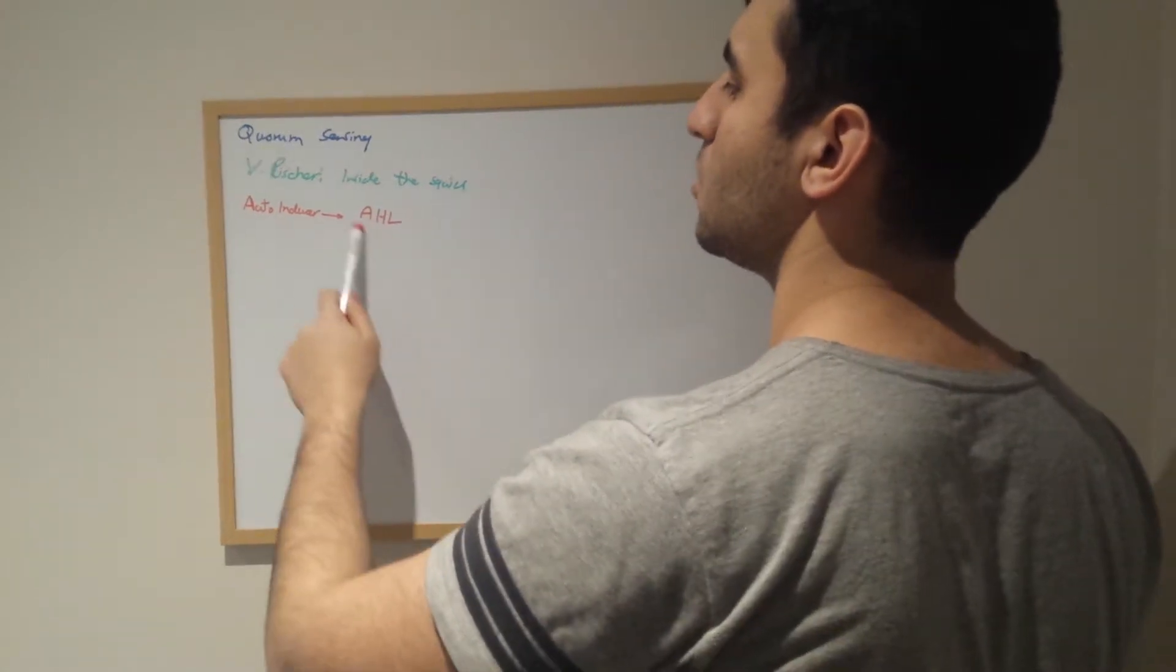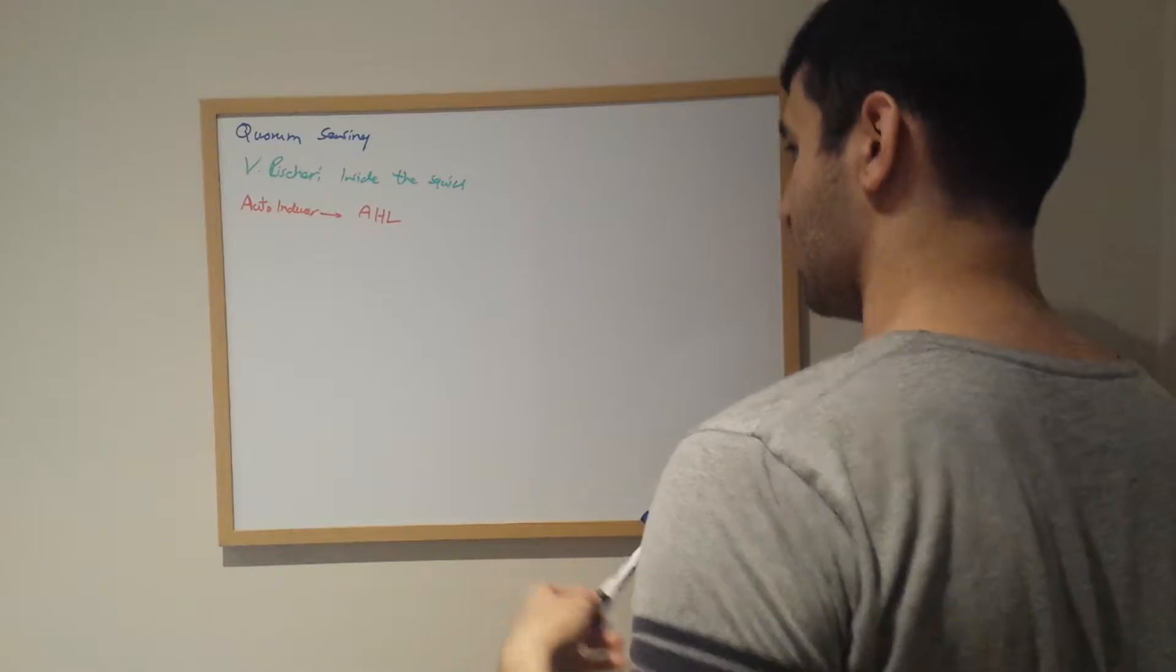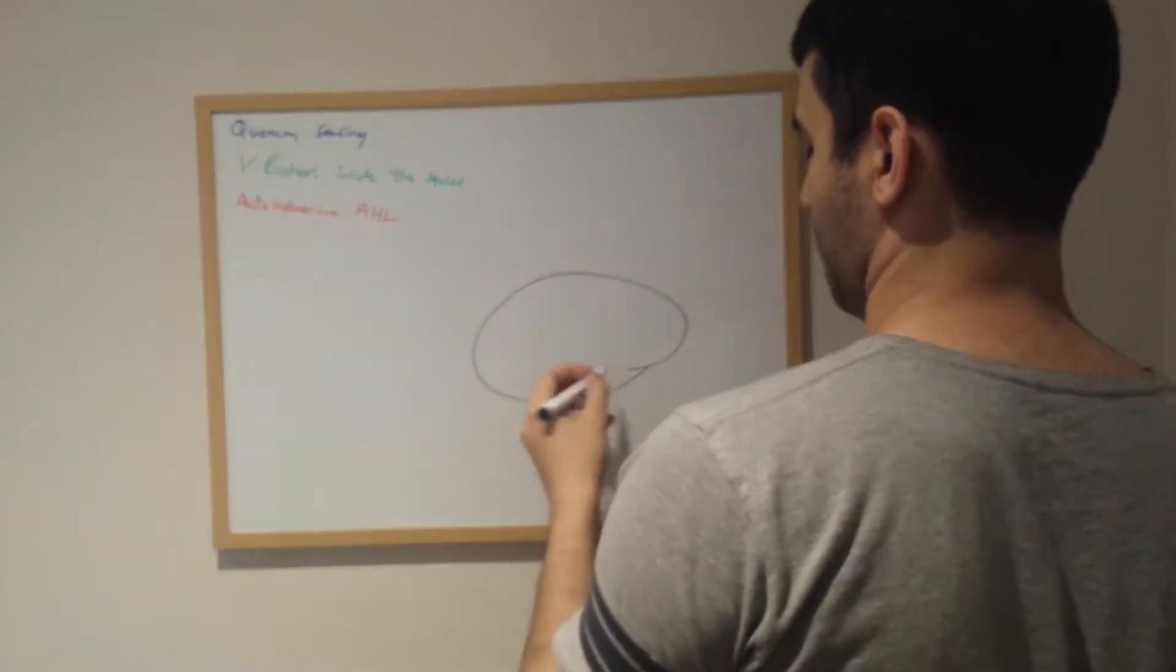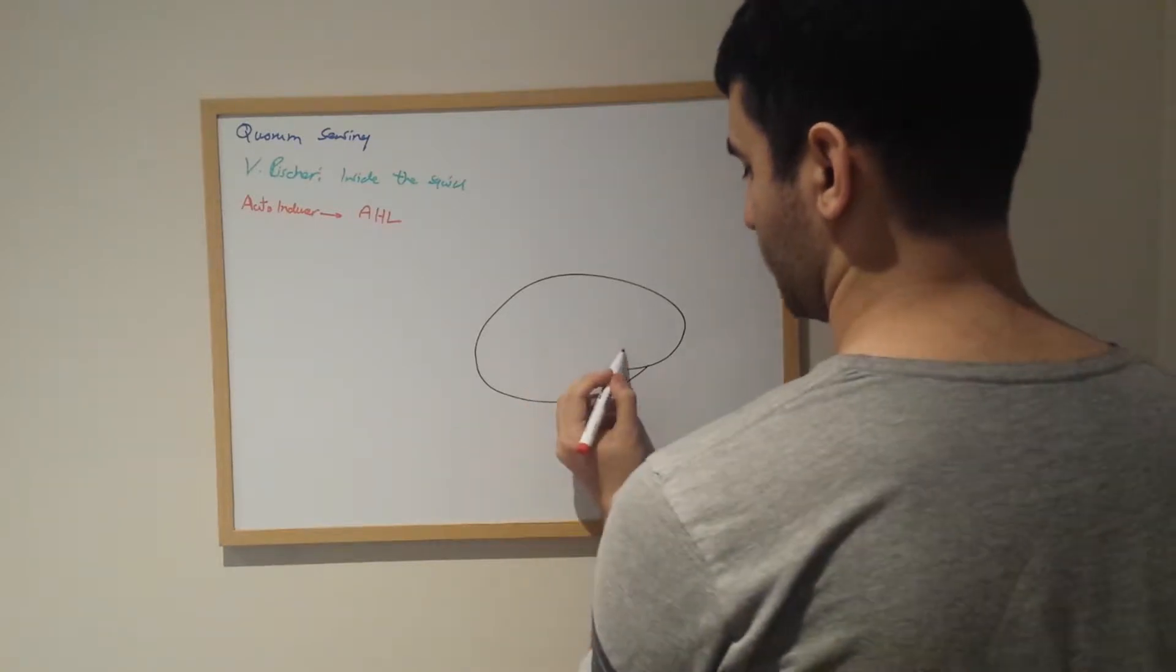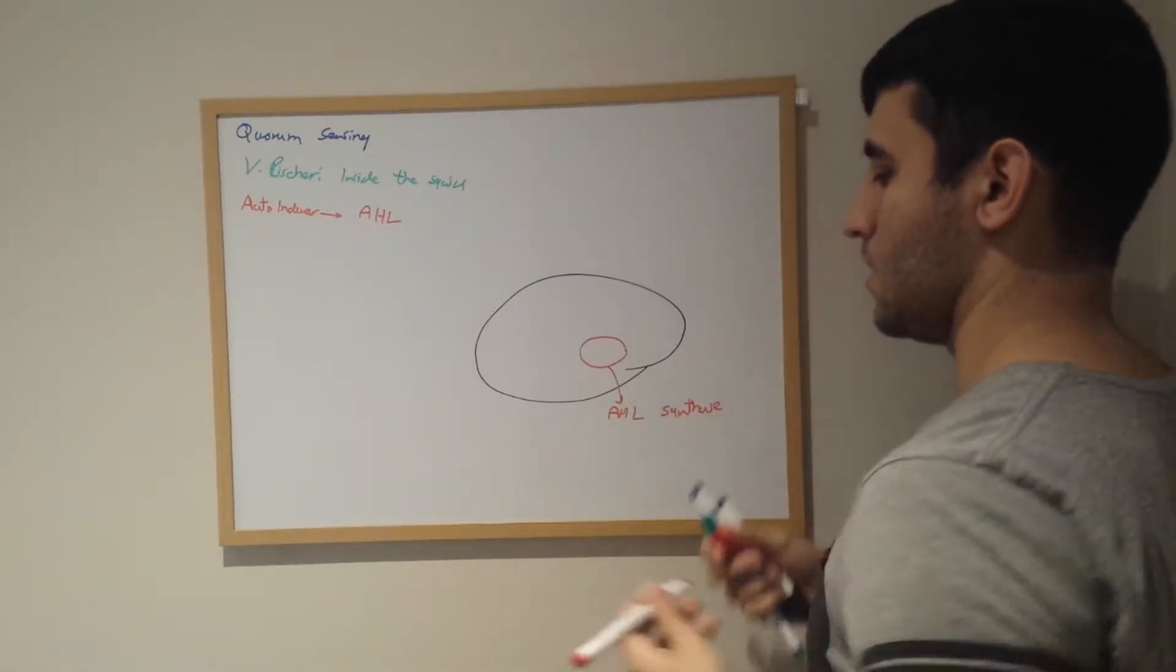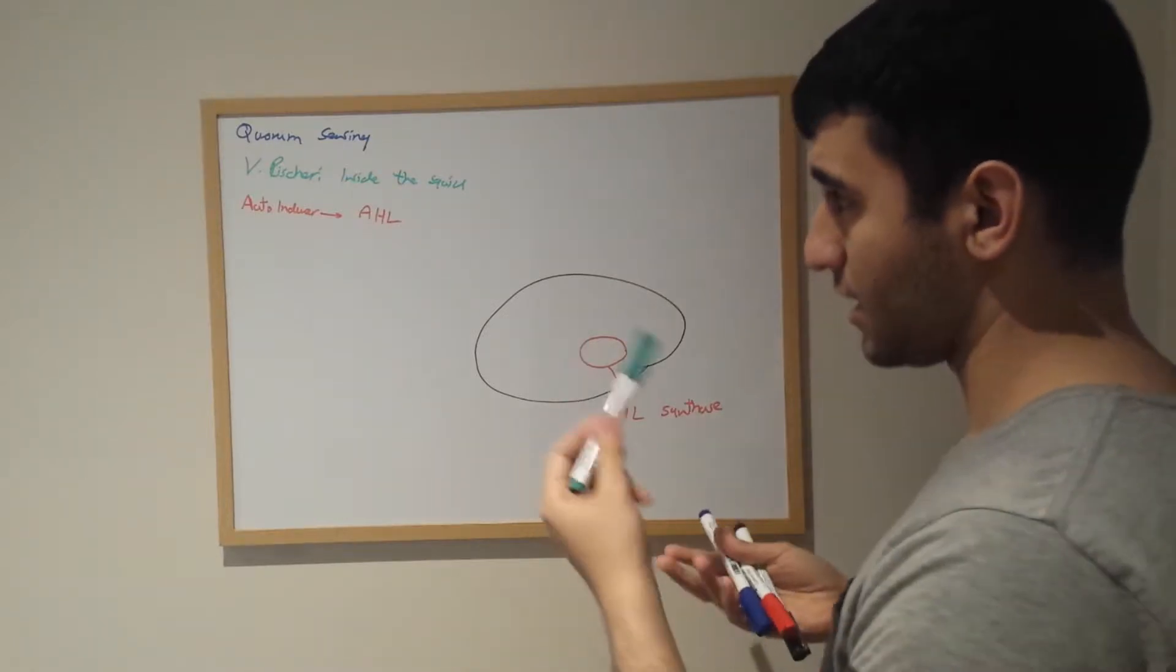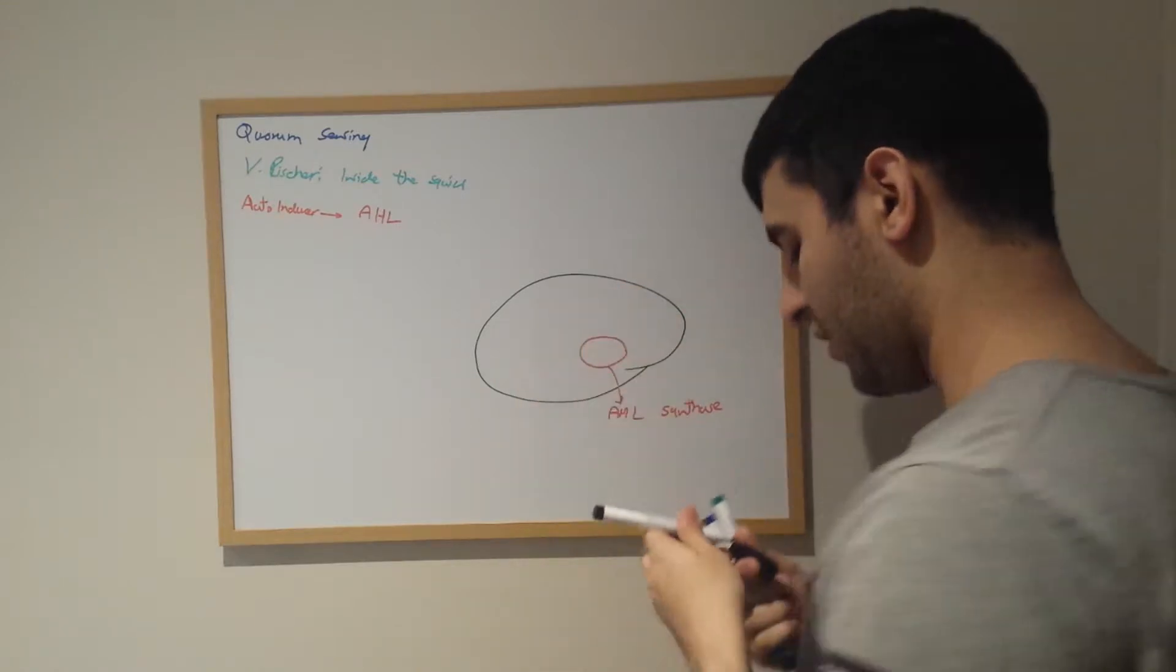Let me show you how. Imagine this is V. fischeri. It has AHL synthase inside itself. This is AHL synthase. As the name suggests, it produces AHL autoinducer.